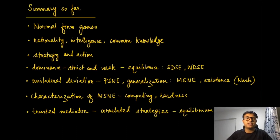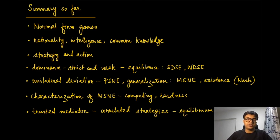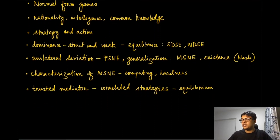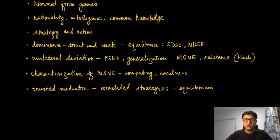Let us make a short summary. So far we have discussed only normal form games and looked at definitions like rationality, intelligence, and common knowledge. We distinguished between strategy and action, studied dominance (strict and weak) leading to strongly and weakly dominant strategy equilibria, then unilateral deviation leading to pure strategy Nash equilibrium, its generalization to mixed strategy Nash equilibrium (existence guaranteed), the MSNE characterization result, the hardness of computing MSNE, and finally correlated strategies via a trusted mediator leading to correlated equilibrium.